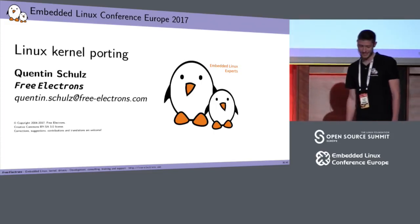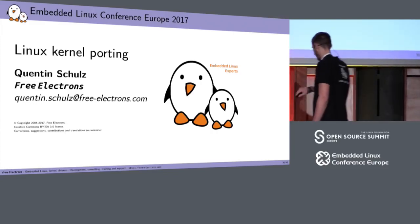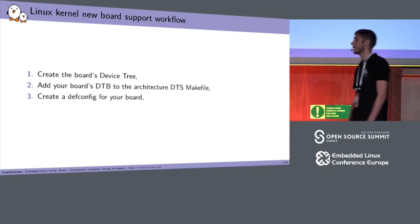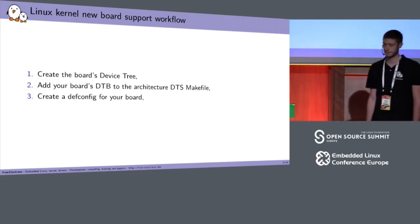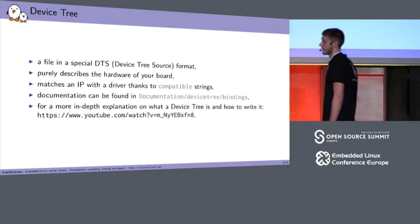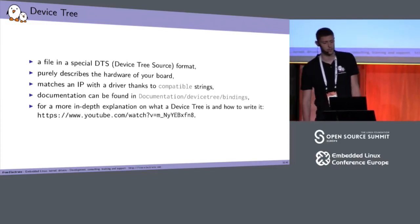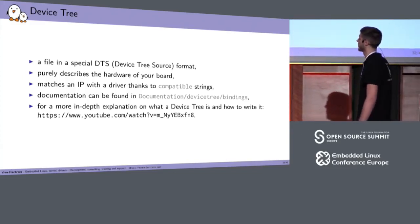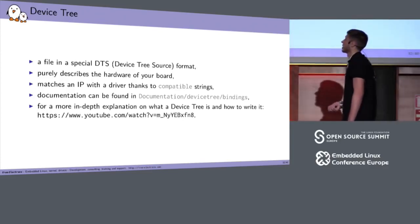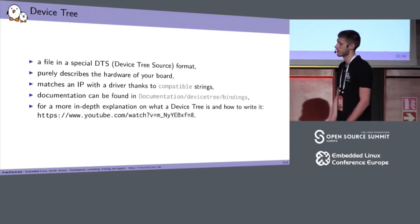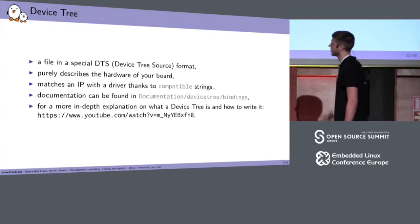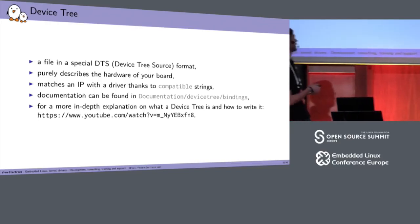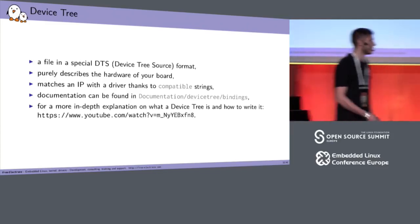That was U-Boot. Now for the Linux kernel — it will be quick. The workflow is: create the device tree for your board, add your DTB to the Makefile, and create a defconfig. The device tree is a DTS file that purely describes your board's hardware and matches IPs with drivers via compatible strings. Documentation is in Documentation/devicetree/bindings. For a good introduction, see Thomas Petazzoni's talk on device tree from four years ago.